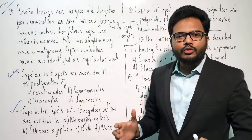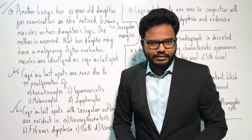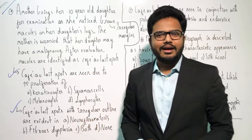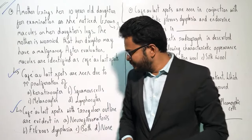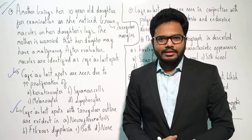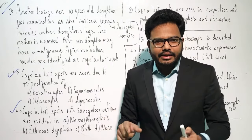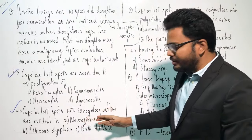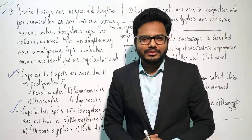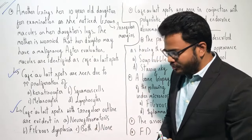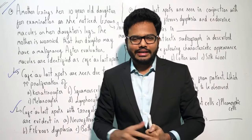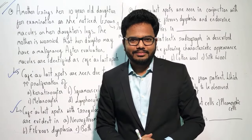Question two: Café-au-lait spots with irregular outlines are evident in which of the following conditions? Option A: neurofibromatosis. Option B: fibrous dysplasia. Option C: both. Option D: none. So which one do you think is more appropriate? The case itself mentioned jagged or irregular outline discolourations. Some of you say A, some say B, some say C. It's not both, and it's not D. So among A and B, which one do you think is the answer?